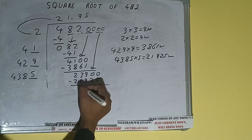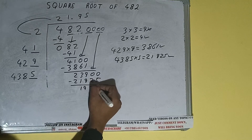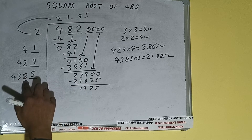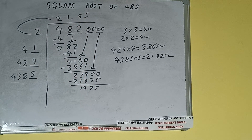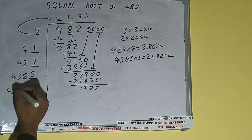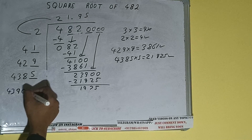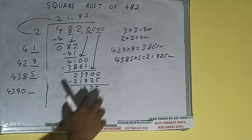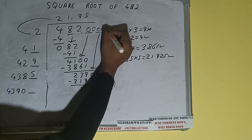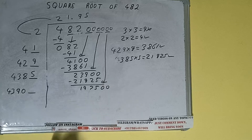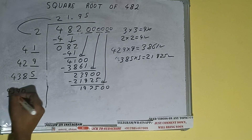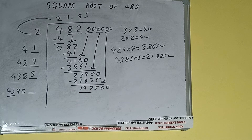We'll be having 1975. 4385 into 5 we did, so add both: 4385 plus 5 will be 4390, and one digit extra. Bring the next pair of zeros down and it will be 197500. Compare 43 and 197.